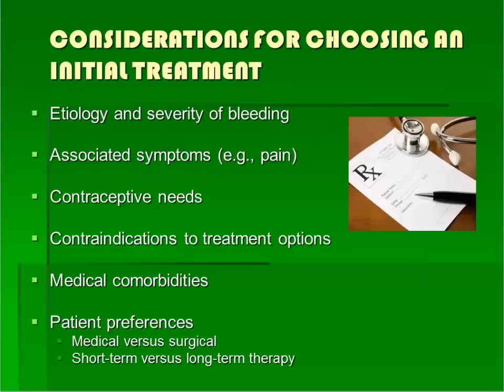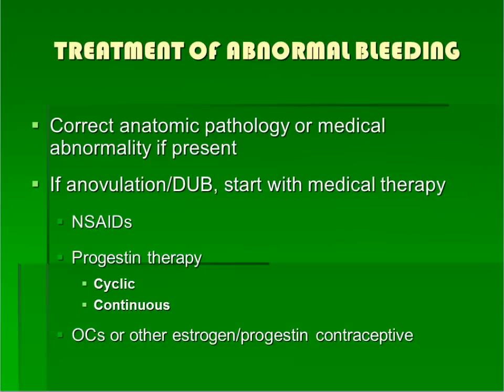Once an etiology for the patient's abnormal uterine bleeding is identified, treatment can be considered. The appropriate choice of therapy will depend on several factors, including the etiology of bleeding and its severity, the patient's medical history, her desire for fertility, and her desire for medical vs. surgical management. If a structural lesion such as a polyp or fibroid is the cause, correction of the anatomic pathology should be curative. If a medical condition such as thyroid disease is present, this should also be corrected. If anovulation is present and other etiologies have been ruled out, medical management should be the first step, which can include NSAIDs, progestin therapy, or estrogen plus progestin therapy.